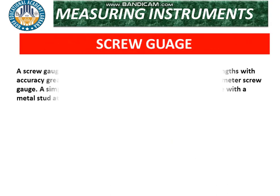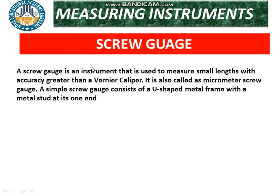The next topic is the screw gauge, also called the micrometer. The screw gauge is an instrument used to measure small lengths with accuracy greater than the Vernier Caliper. The least count of the screw gauge is 0.01 mm, whereas the least count of the Vernier Caliper is 0.1 mm. It is used to find length, diameter, and radius.